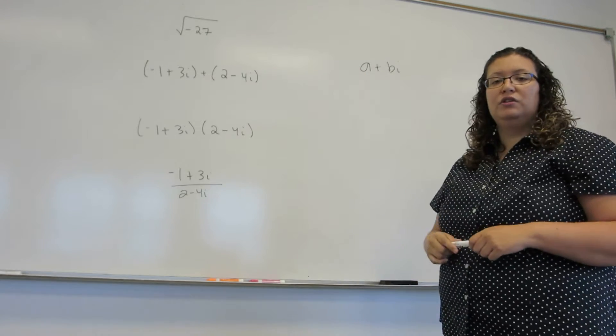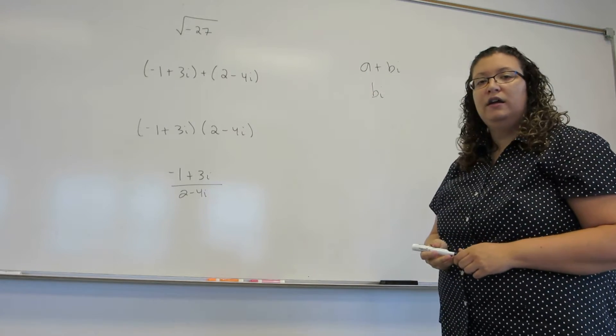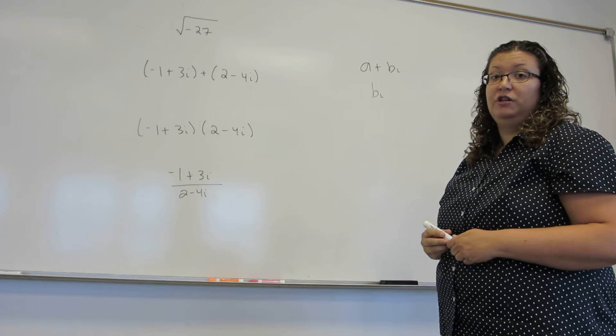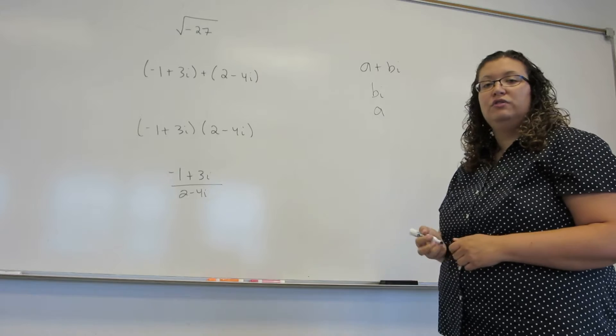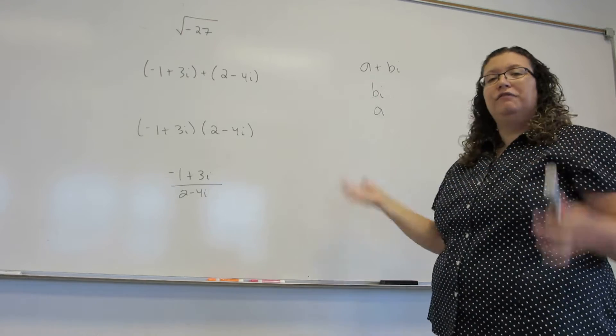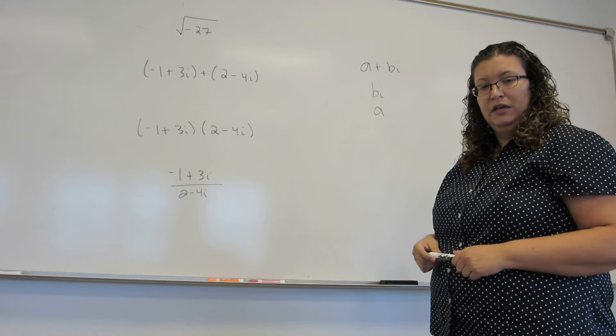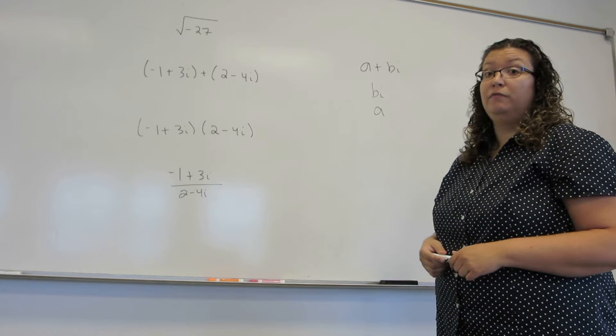Now, sometimes there is no a term. If a number is just a real number times i, we call it purely imaginary. If a number has no b part, so it's just a number a, it's just a real number. But all of those are still complex numbers. In fact, complex numbers encompass all the types of numbers you're familiar with.